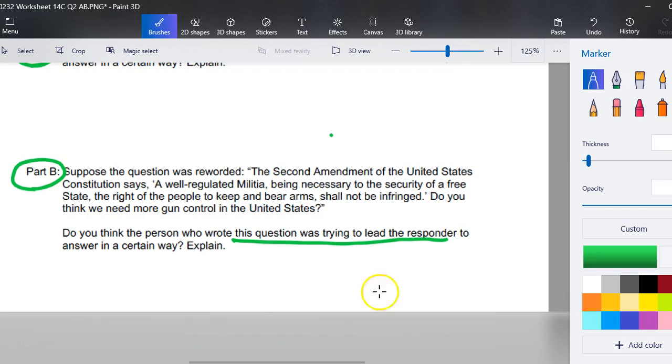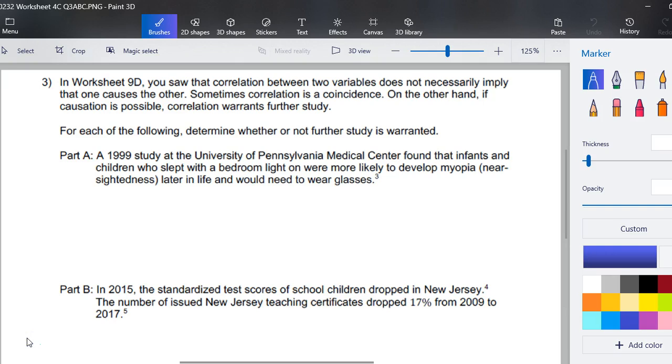In your worksheet 9d you saw that correlation between two variables does not necessarily imply that one causes the other. Sometimes correlation is a coincidence. On the other hand, if causation is possible, correlation warrants further study. For each of the following, determine whether or not further study is warranted. Part A: a 1999 study at the University of Pennsylvania Medical Center found that infants and children who slept with a bedroom light on were more likely to develop myopia, nearsightedness, later in life and would need to wear glasses.